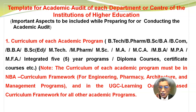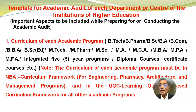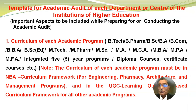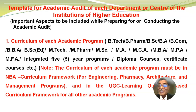Number 1: Curriculum of each academic program — B.Tech, B.Pharm, B.Sc, BA, B.Com, BBA, M.Tech, M.Pharm, M.Sc, MA, MCA, MBA, MPA, MFA, integrated 5-year programs, diploma courses, or certificate courses etc. The curriculum of each academic program must be in the NBA curriculum framework for engineering, pharmacy, architecture and management programs, and in the UGC learning outcomes-based curriculum framework for all other academic programs.